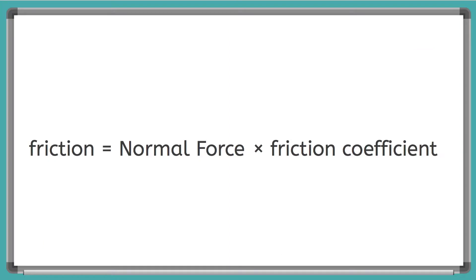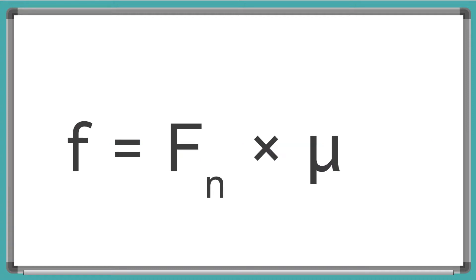So the equation for friction can be written as friction equals the normal force times the friction coefficient. And remember, from algebra, we can use variables to represent certain quantities. So we can rewrite this equation as f equals Fn times mu. And I know that this might look more confusing, and there's a crazy looking symbol that you may have never seen before. But it's simpler than it looks. Let's break it down.